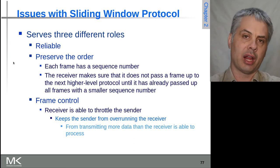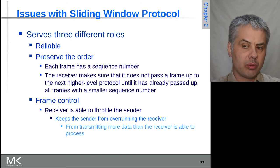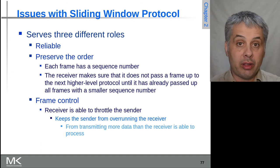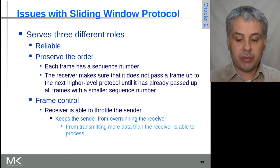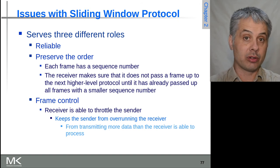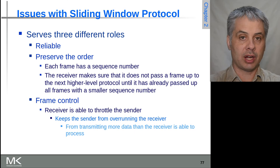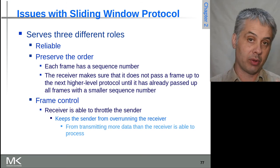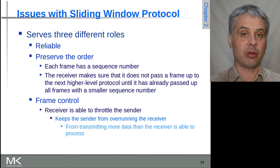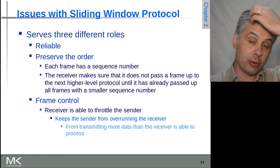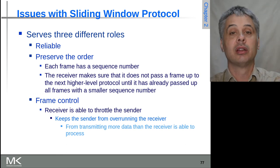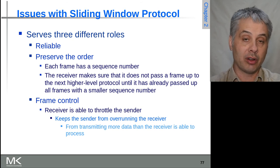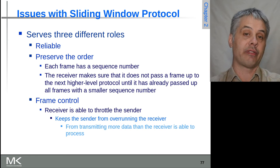Stepping back and looking at what sliding window actually achieves for us in a network: there are a number of things it does. First, it provides reliability — if a frame is lost in transit, it can arrange for its reasonably efficient retransmission. It also helps ensure that data arrives in the same order it was sent, even if frames arrive out of order due to loss and retransmission, or because frames are sent over multiple links simultaneously and re-aggregated at the other end — much like multiple people driving to the same destination by different routes might arrive at different times.